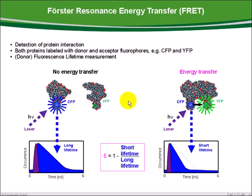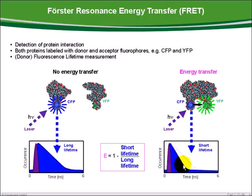I now want to give you a short introduction to FRET. Here we see two proteins which are labeled with donor and acceptor dye molecules. After binding, FRET takes place and the energy is transferred to the acceptor molecule. FRET induces quenching of the fluorescence lifetime of the donor molecule, which becomes shorter in comparison to the donor molecule measured in absence of the acceptor dye.